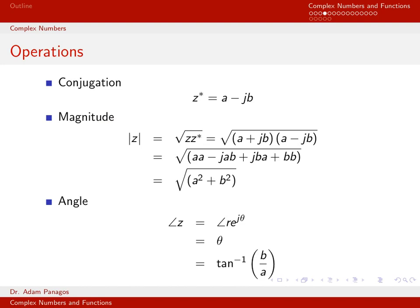We can also talk about computing the angle of a complex number, written with the angular symbol. When dealing with angles, using the polar format of the complex number z is often easier. Writing z as r·e^(jθ), r has no angle — it's a real quantity — and the angle of e^(jθ) by definition is θ. So the angle of z equals θ, which is also the tan inverse of b over a from basic trigonometry.